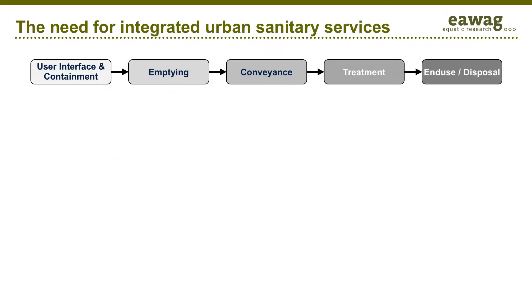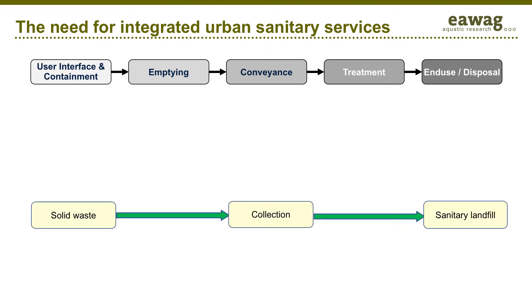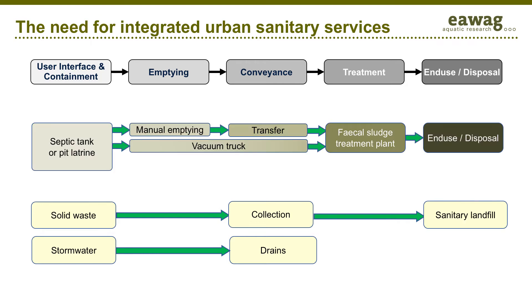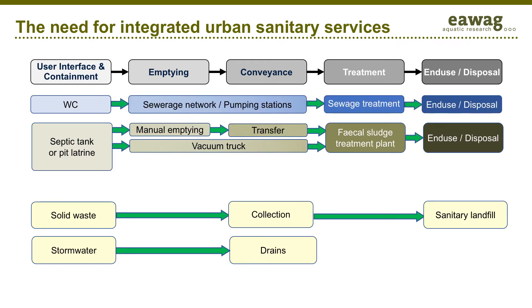The left side of the diagram shows five basic urban sanitary services: solid waste, stormwater drainage, latrines, septic tanks and sewerage. Each has a safe service chain, which is illustrated from left to right by the green arrows. The delivery of these services to households is constrained by the way land is managed and owned.